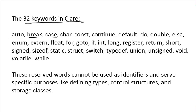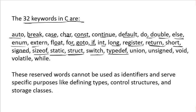The 32 keywords in C are: auto, break, case, char, const, continue, default, do, double, else, enum, extern, float, for, goto, if, int, long, register, return, short, signed, sizeof, static, struct, switch, typedef, union, unsigned, void, volatile, and while.